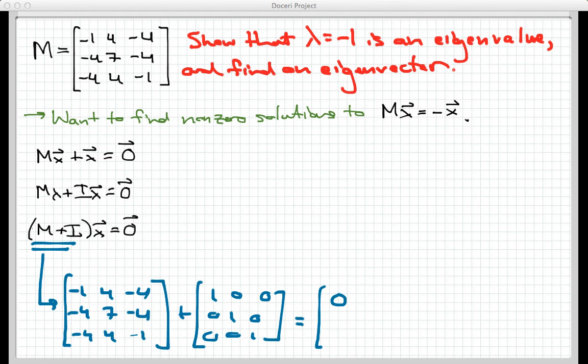We get 0, 4, minus 4, negative 4, 8, negative 4, and then negative 4, 4, 0.